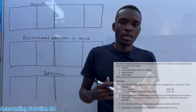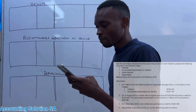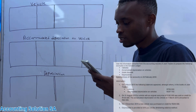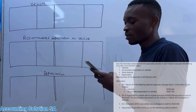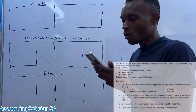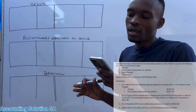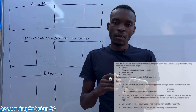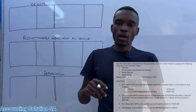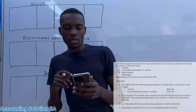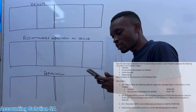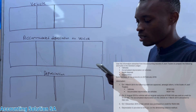About a fixed assets ledger account. Let's go to our question. Use the information extracted from accounting records of Josh Traders to prepare the following accounts in the general ledger. Number one: prepare the vehicle account. Number two: accumulated depreciation on vehicle. Number three: assets disposal — I already did a separate video for this part, so please go and watch the assets disposal account video after this one.